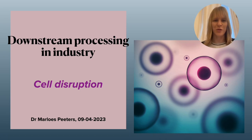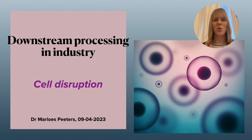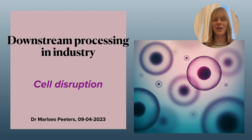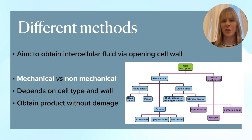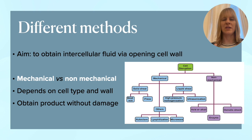Welcome to this next video about downstream processing in the pharmaceutical industry. In this particular video, I'm going to talk about the cell disruption process. Imagine you have your product inside the cell and you need to get it out. What methods can you use for that, and what's commonly used in industry? Your ultimate aim is to access the intracellular fluid by opening the cell walls in order to get your products, and you don't want to damage the product in the process.